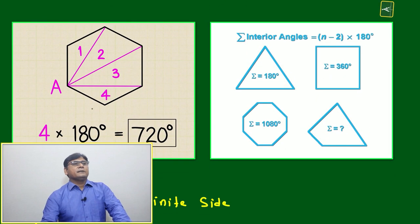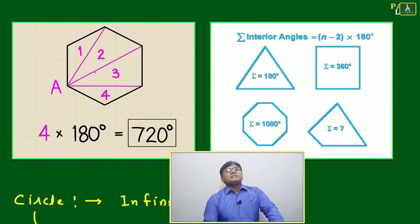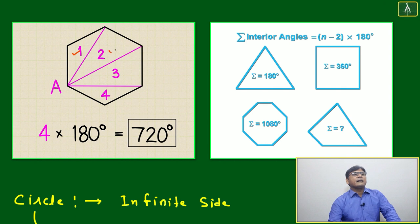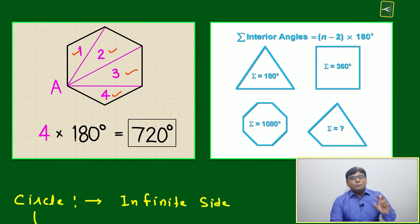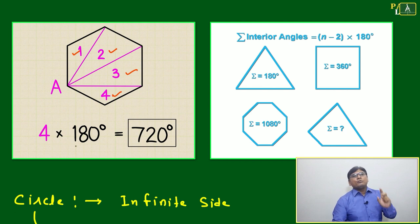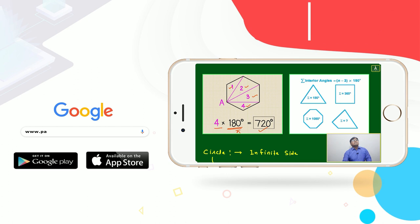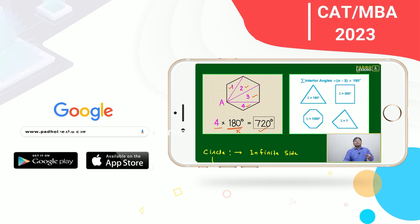Here is another representation: a hexagon can be divided into four triangles — triangle 1, triangle 2, triangle 3, triangle 4. The sum of interior angles of one triangle is 180° or π, so the sum for all four triangles is 4π = 720°. This is another explanation of the interior angle sum formula — divide the polygon into triangles and count based on the number of triangles.